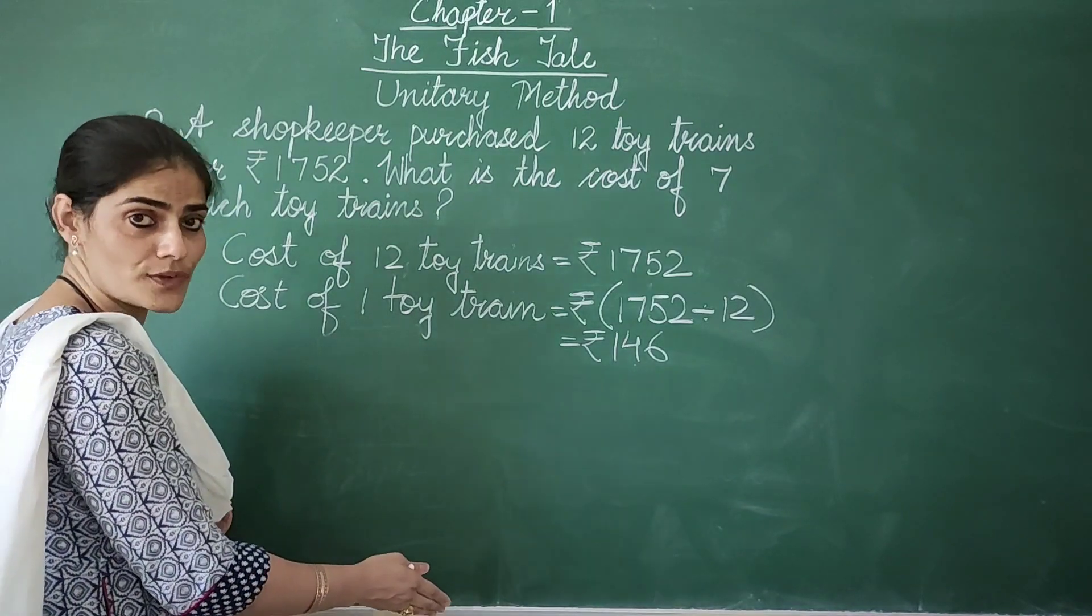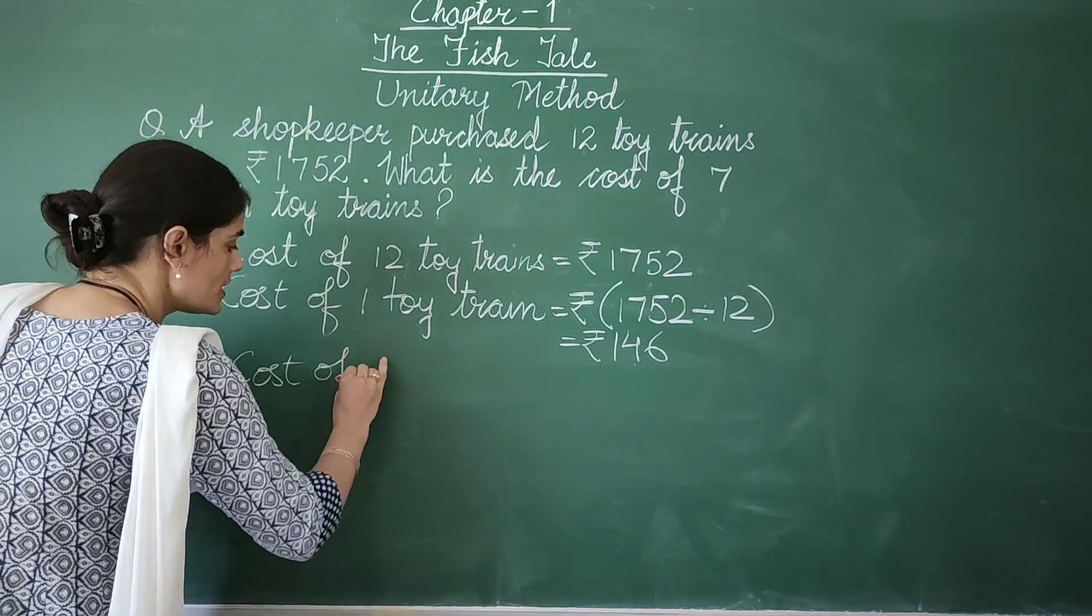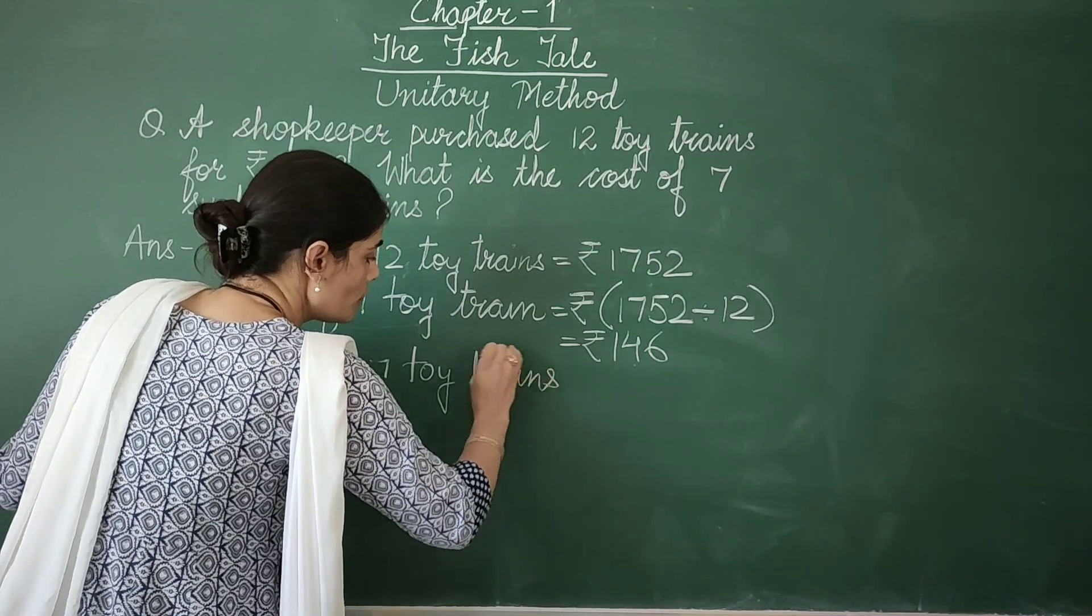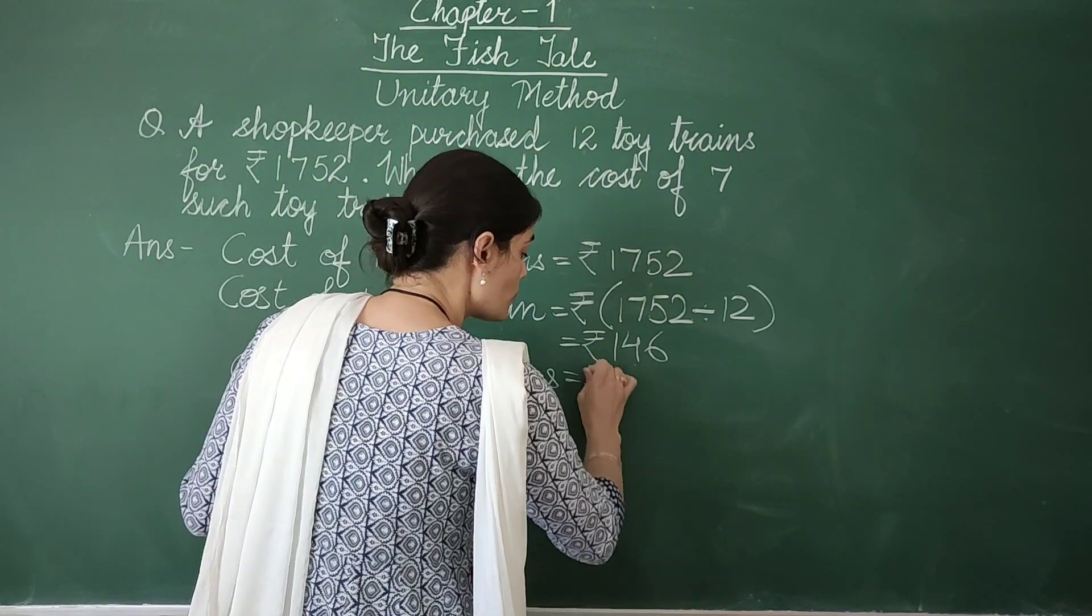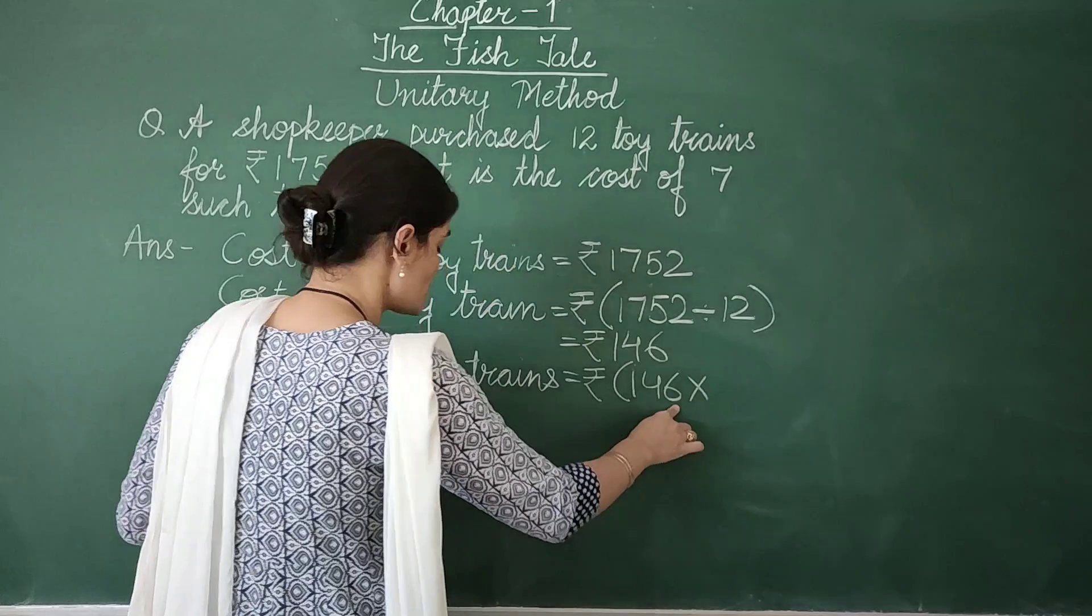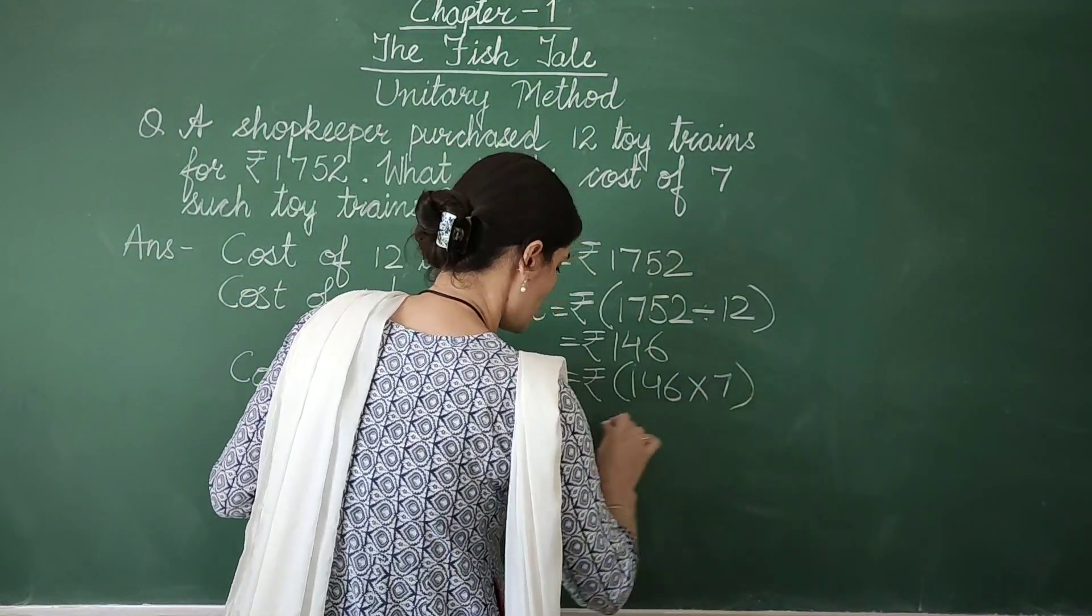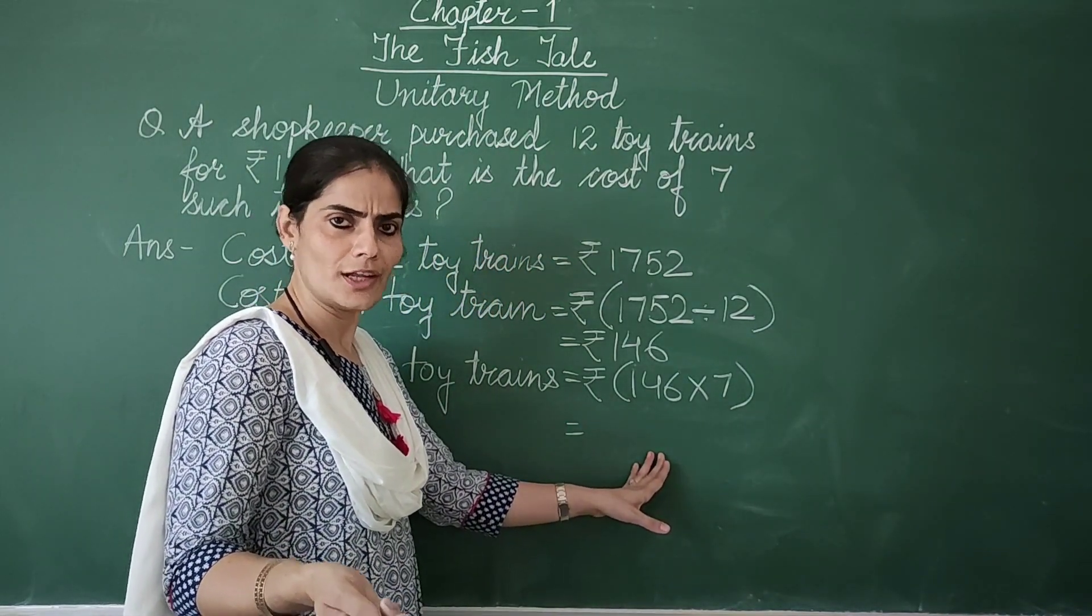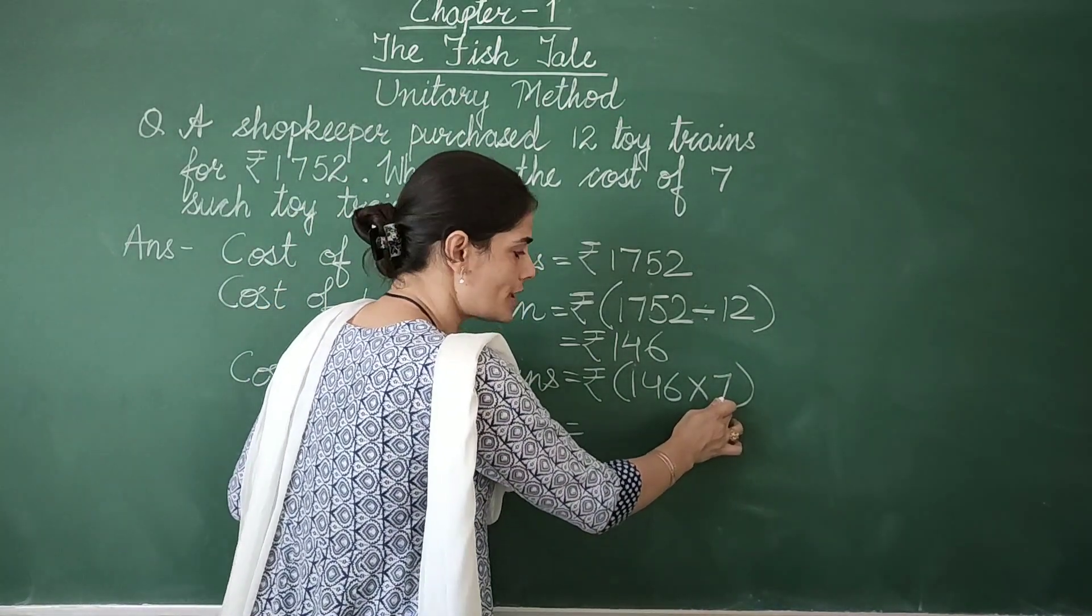So cost of 7 toy trains will be more than the cost of 1. And when we expect the answer in more, we multiply. So 146 will be multiplied with the required number. And the required number is 7. Can I do the multiplication from here itself? As I know the table of 7 and you also know the table of 7. So let's do it this way.